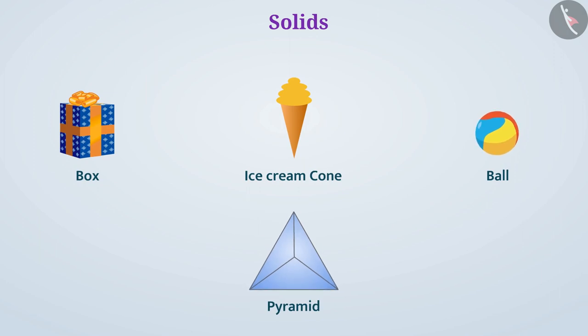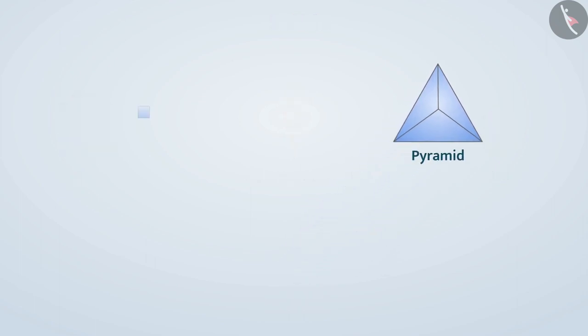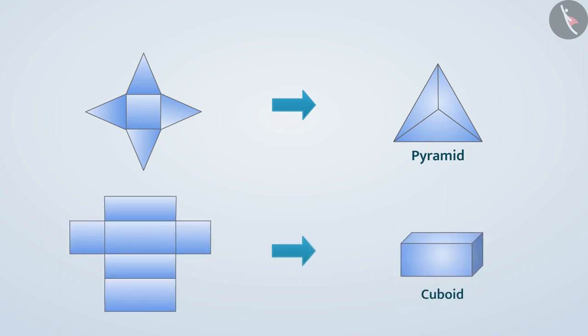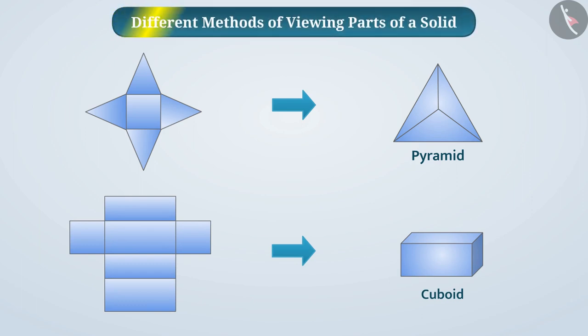These solids are made from different parts according to the size and shape. For example, a cuboid can be made with many rectangular pages. Today we will discuss the methods with which we can see different parts of a solid.